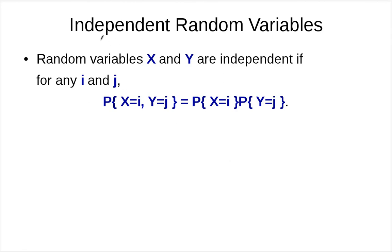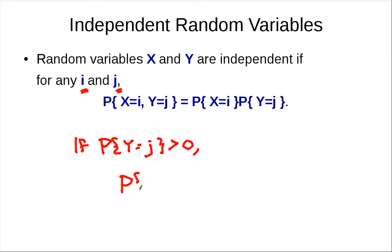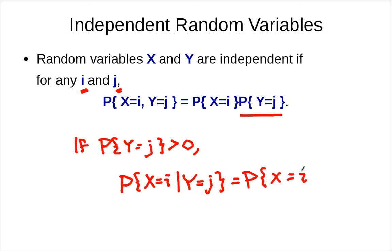Let's review the definition of independent random variables. We say that random variables X and Y are independent if for any values i and j, the probability that X equals i and Y equals j equals the probability of X equals i times the probability of Y equals j. This implies that if P(Y=j) is greater than zero, then P(X=i | Y=j) equals P(X=i) — knowing that Y equals j doesn't change any probability of X being i.